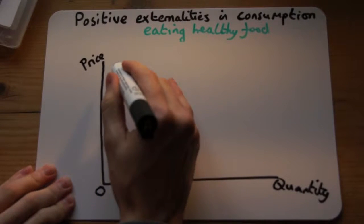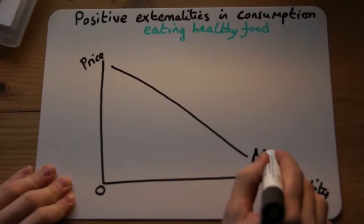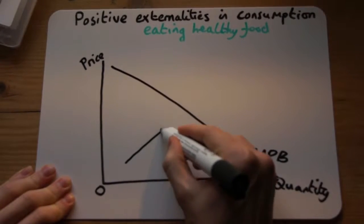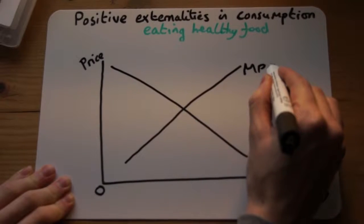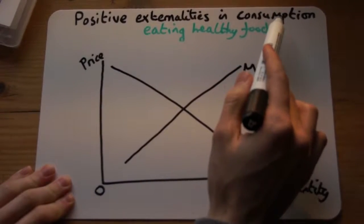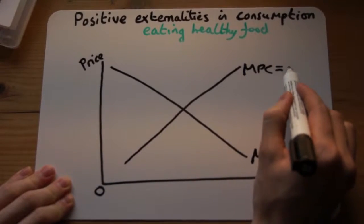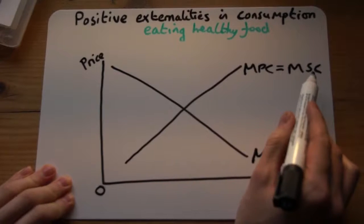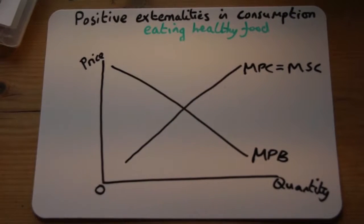The first thing we need to do is find the marginal private benefit line and draw that in. Then we draw in the marginal private cost line. Because we're looking at consumption here, nothing to do with production, so we make the private cost equal to the social cost — the private cost and social cost is all to do with production, and we're looking at consumption in this case.